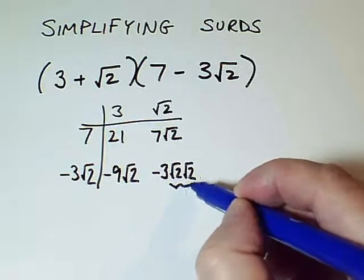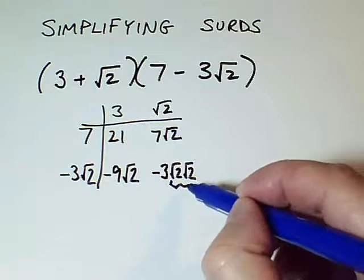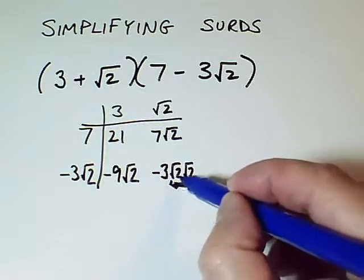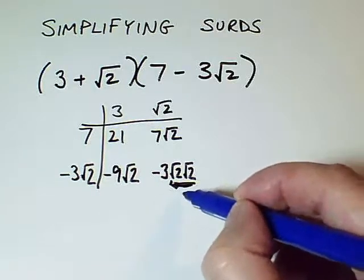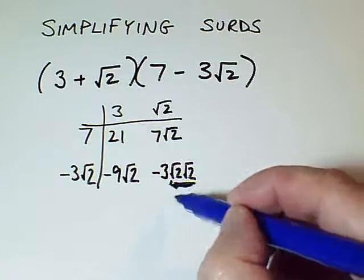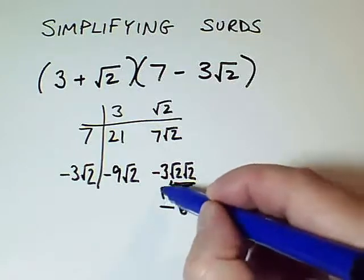But I know that root 2 multiplied by itself, this bit here, equals root 2 times itself. Its job is to equal 2. So this is minus 3 times 2, so this is minus 6 down here.